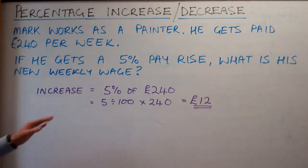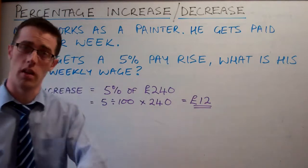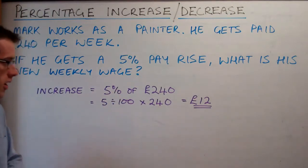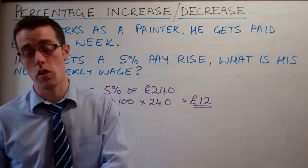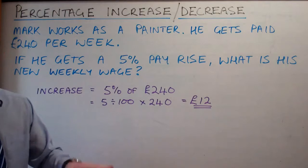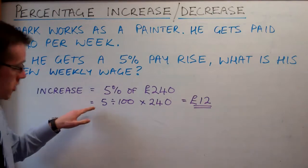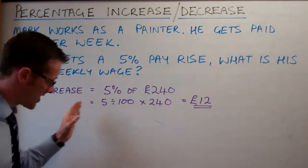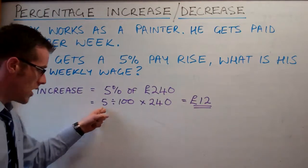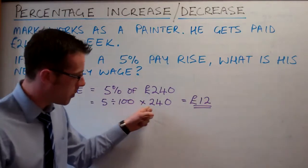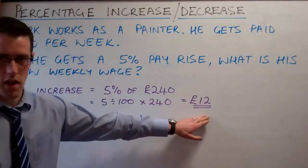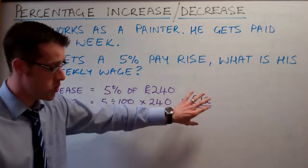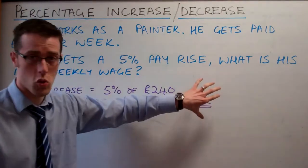There are some shortcuts to doing 5% — you can find 10% which is 24 and halve it — but I'm going to stick to one consistent method. This works whether it's 5%, 6%, 7%, 8%, or 9%. The percentage divided by 100, multiplied by the amount, gives us the 5% of £240. That's the increase he gets — not his new wage, just how much his wage is going up by.